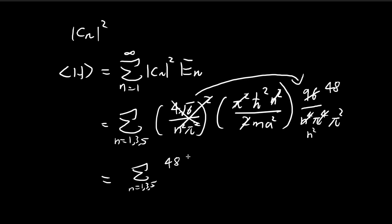So in the end, we're left with something like this. We have 48 times the reduced Planck constant squared divided by pi squared ma squared. And then also 1 over n squared. And so you see that we have a bit of a problem over here. Now we have all the constants, so these are straightforward enough. And now we have this infinite series.